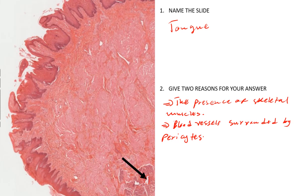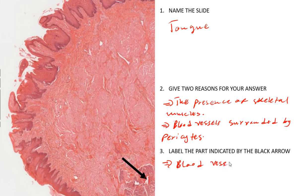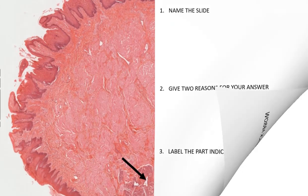Label the part indicated by the black arrow: these are blood vessels. These blood vessels are surrounded by pericytes. There are some dark-spotted cells around the blood vessels — we can't easily identify them on this particular slide, but that should not limit us from giving the reasons.